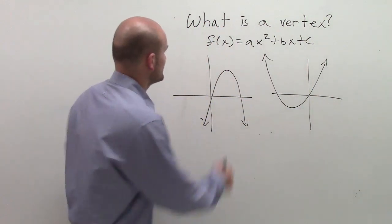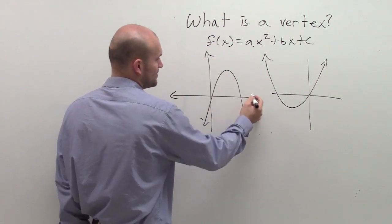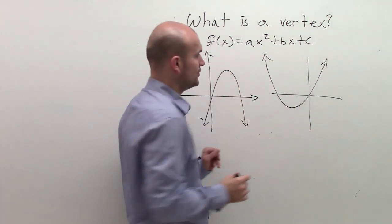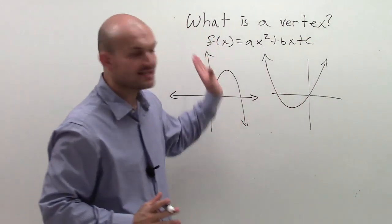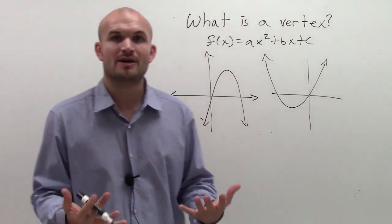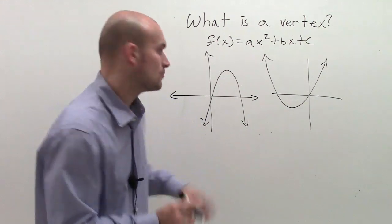One of them, you can see, kind of opens downward. It falls to the left and falls to the right. The other graph looks like it rises left and rises right, and it kind of opens upward. So first of all, before we talk about a vertex, when do we know which one is which?